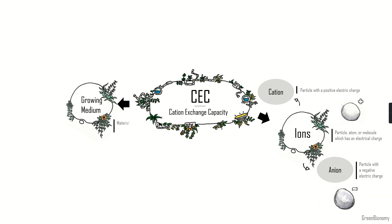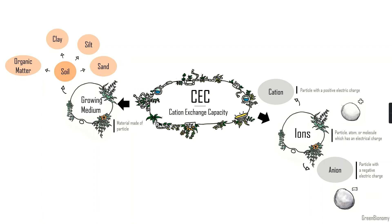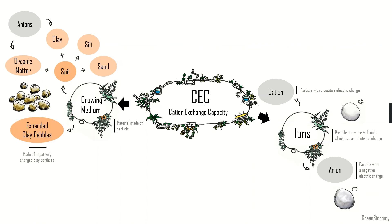The second thing we need to understand is the growing medium. It's simply material made of particles. If we take soil for example, it's a composition of different particles: sand, silt, clay, and organic matter. Together these particles make up the soil. These particles can also have a charge — in soil, clay and organic matter are ions with a negative electric charge. In hydroponics you use your own growing medium; for example, expanded clay pebbles are made of negatively charged clay particles.